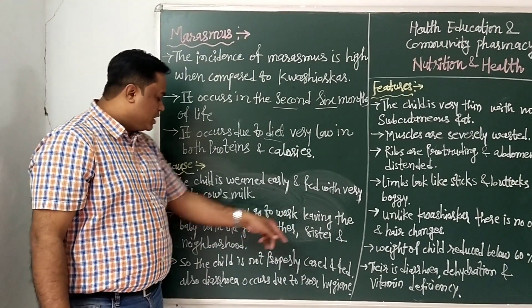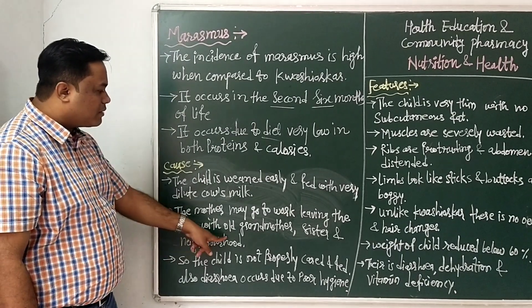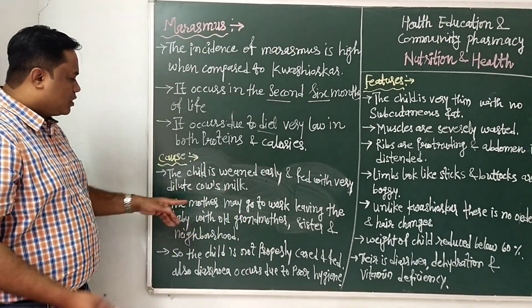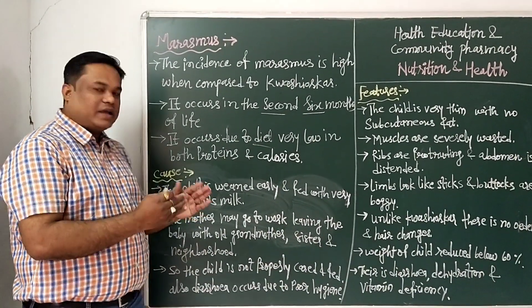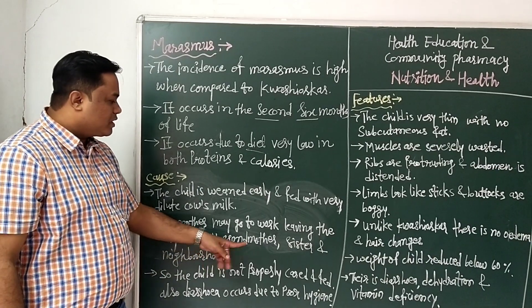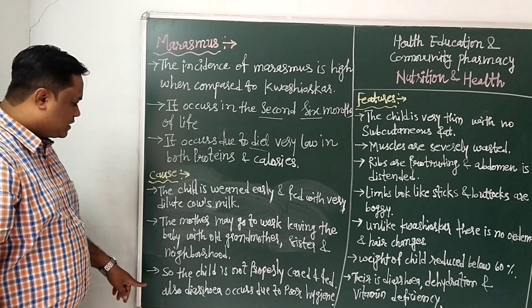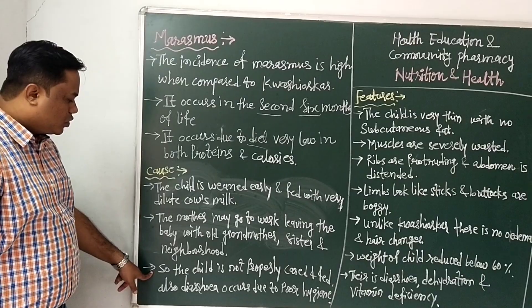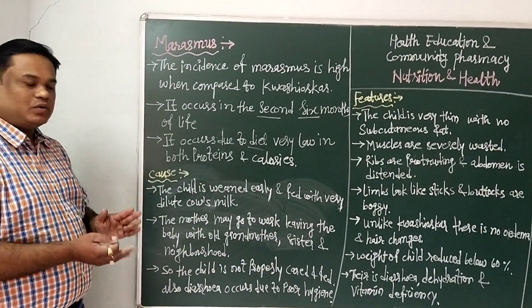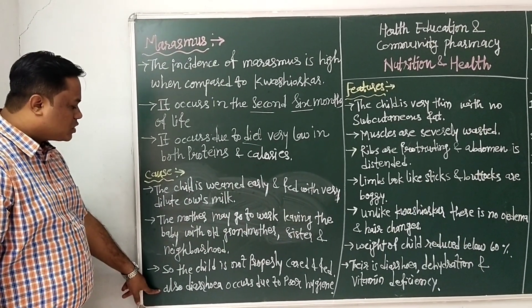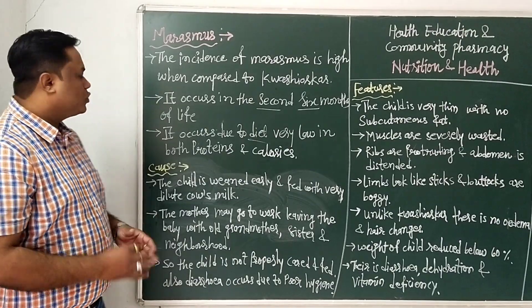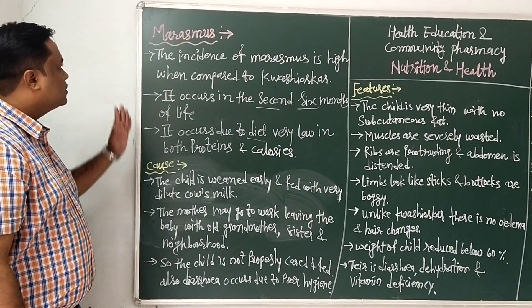The second cause is that the mother may go to work, leaving the baby with an old grandmother, sister, or neighbors. The mother does not directly care for the child, so the child is not properly cared for or fed. Additionally, diarrhea can occur due to poor hygiene. These are the causes of marasmus.